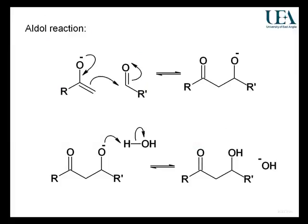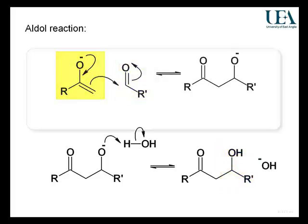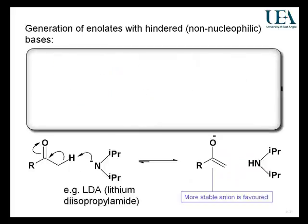Now, I want to move on to a different type of carbon-carbon bond formation. It's taking an aldehyde and making an alcohol, and it's doing it using an enolate. First, you take your ketone — that's your starting material — and then you want to make the enolate. You want to make lots of the enolate because you want to do an aldol reaction. So you add LDA, a very strong, bulky base.